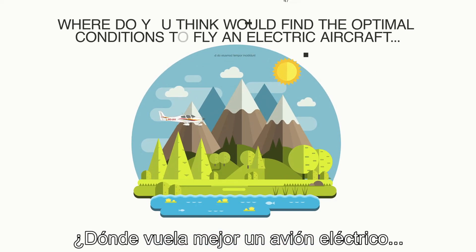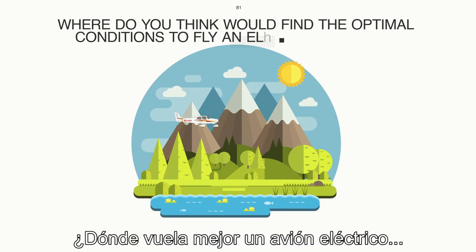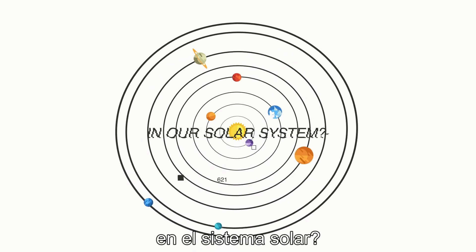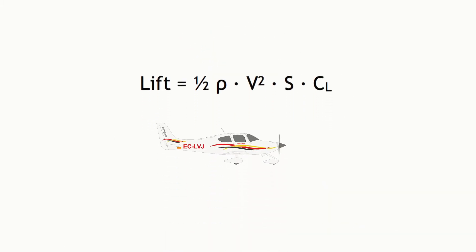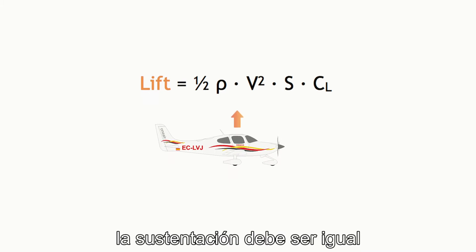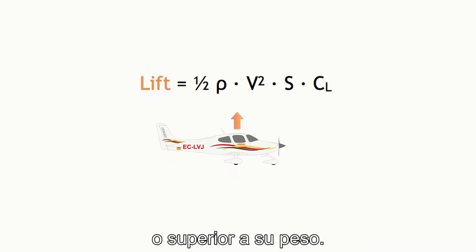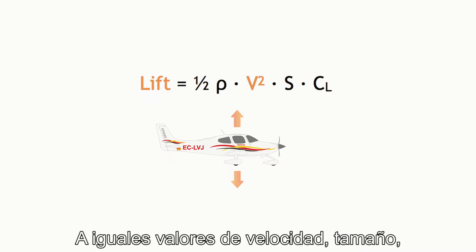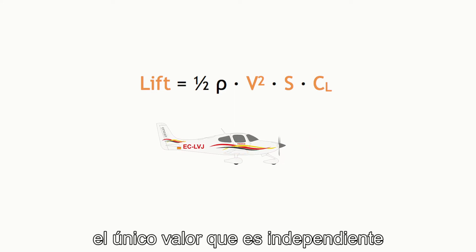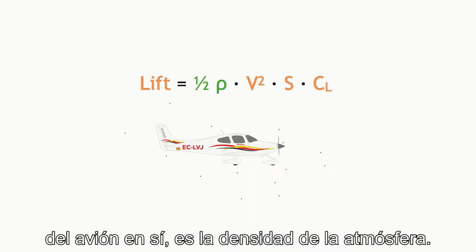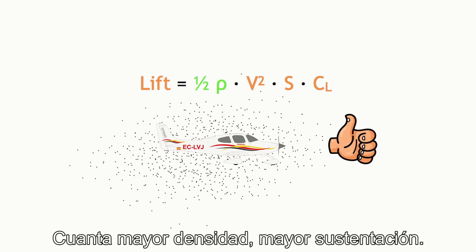Where do you think you would find the optimal conditions to fly an electric aircraft in our solar system? Here we have the equation for lift. For an aeroplane to fly, the lift it produces has to be greater or equal to its weight. Assuming the speed, size, shape, and position of the wings remain constant, the only value which is independent of the aircraft is the density of the atmosphere. Greater density provides greater lift.